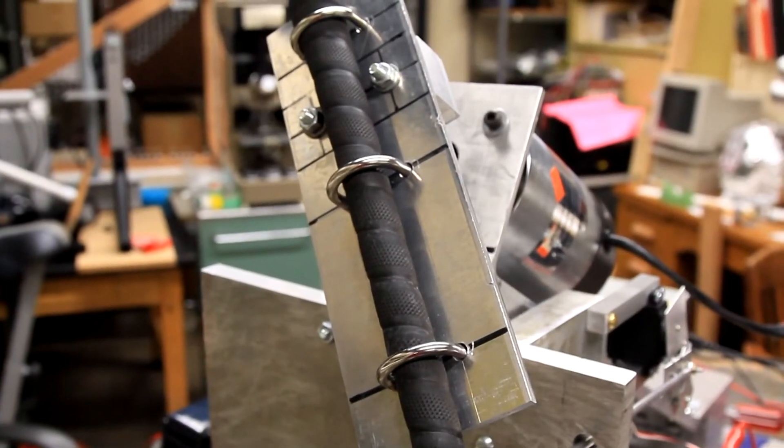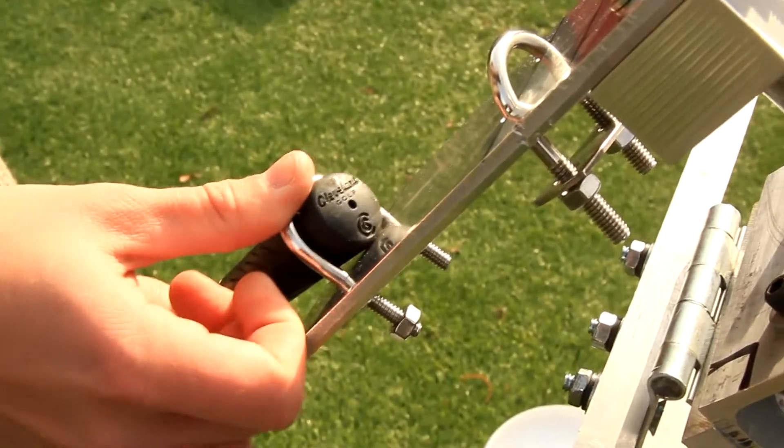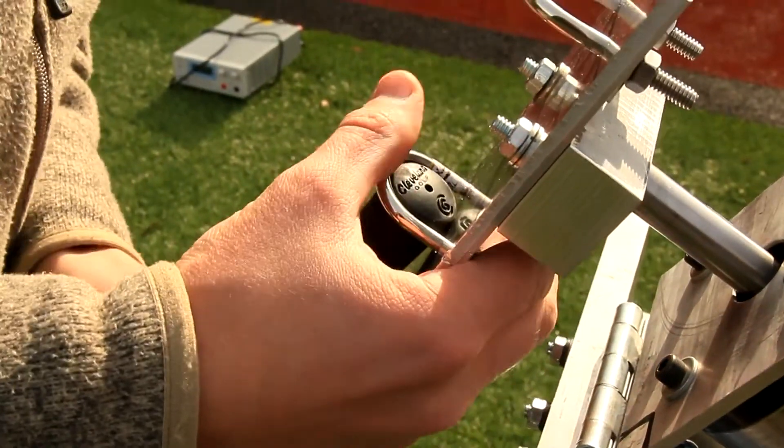To hold the club on the motor we created a club mount system that consists of fastening the club to the plate with u-bolts so it can't fly off mid-rotation.